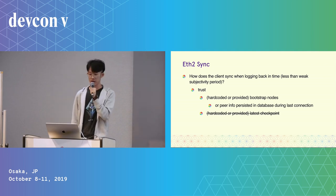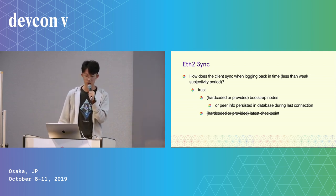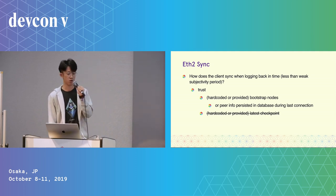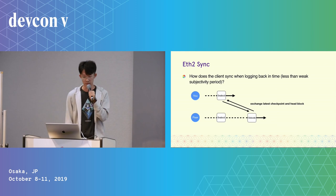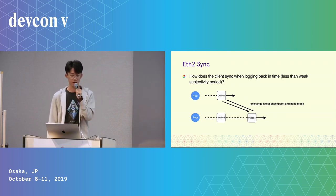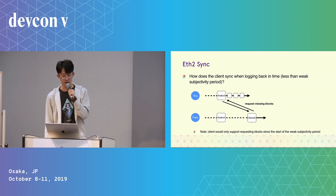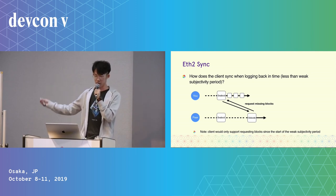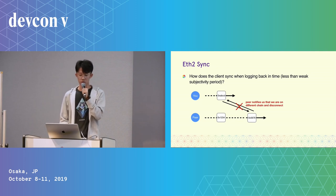Second situation: how does the client sync when you go offline but log back in on time? You still need to trust the bootstrap nodes, or you can use the peer info persisted in the database from your previous connection. But now you do not need to trust the latest checkpoint, because you can use the checkpoint from the last time you were online and start syncing from there. It's mostly the same — you connect to peers, exchange the latest checkpoint, head block, and other information to decide if you're on the same chain, and request missing blocks. Note that the client will only support requesting blocks since the start of the weak subjectivity period, so you won't be able to sync blocks older than that.